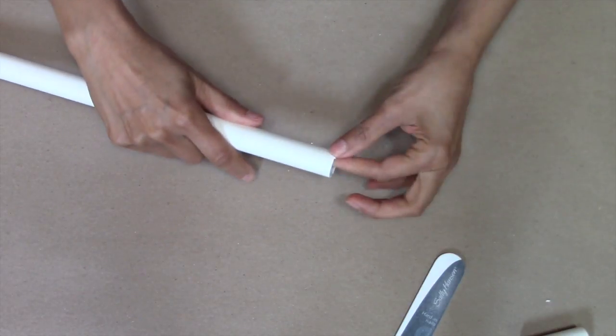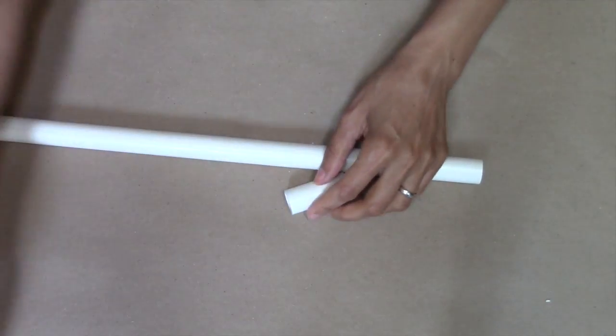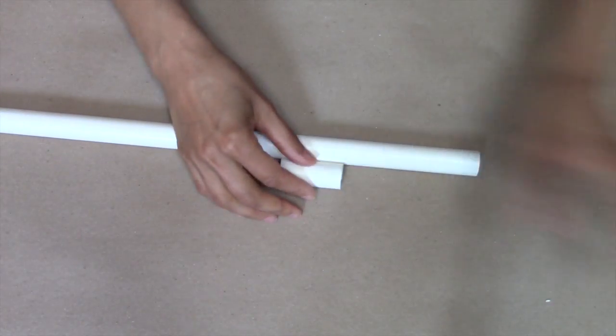Check the edges of your PVC pipe and file them down to remove any burrs. We want everything to fit snugly and smoothly together.